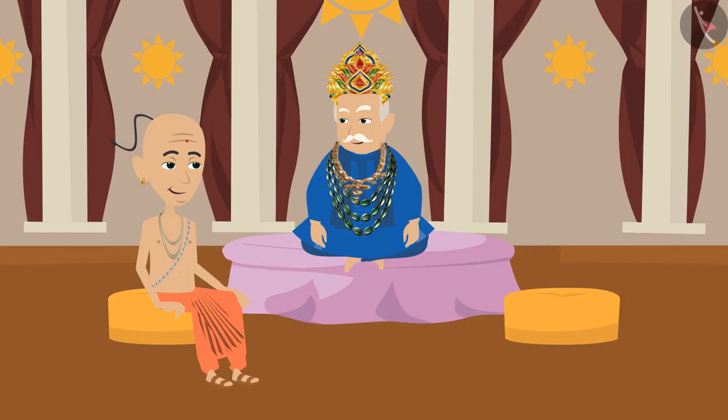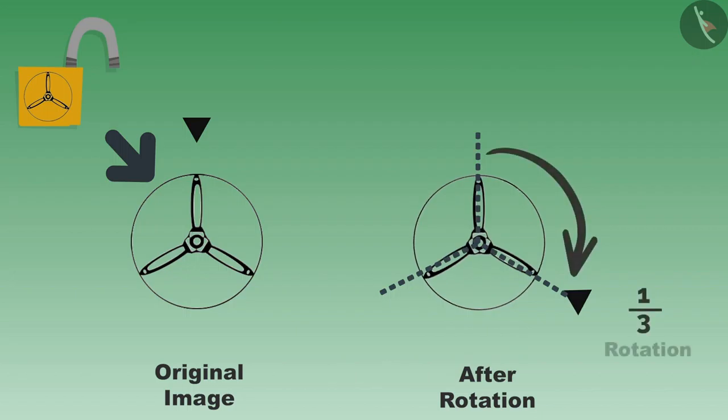Also, we will see how Tenali Rama helped King Krishnadevaraya and the kingdom use this concept. To close this lock, one-third rotation was needed. But there was no difference in its shape even after the one-third rotation.